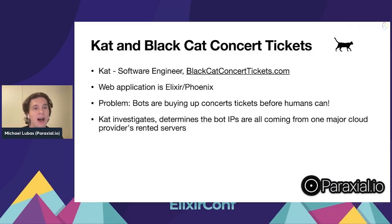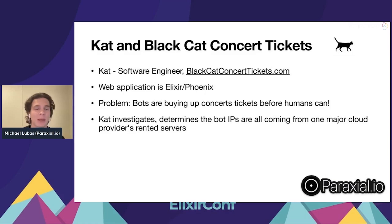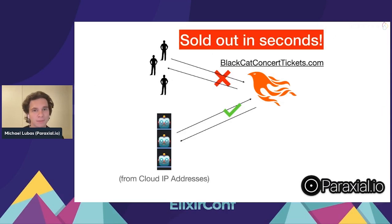One day she runs into a problem where bots are purchasing concert tickets before people can. This is a pretty common problem — someone purchases all of the tickets before real people can and then resells them at a higher profit, sometimes termed scalping. Many places frown upon this; here in America there are laws against it, and Cat doesn't like it either, so she decides to investigate and wants to fix it.